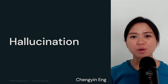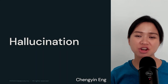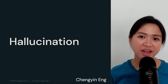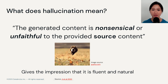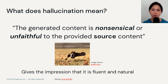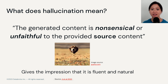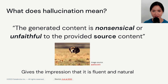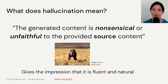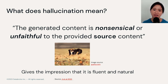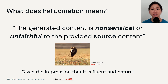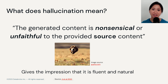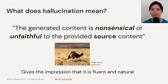We talked about how many of the outputs from large language models indicate that these models hallucinate. But what does hallucination mean? From a 2022 paper, hallucination refers to when the generated content is nonsensical or unfaithful to the provided source content. It means the output can sound completely natural and fluent, and also sound really confident even when it's wrong.